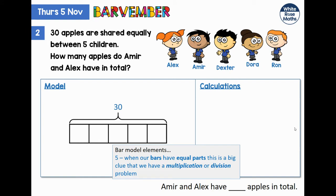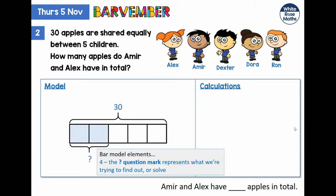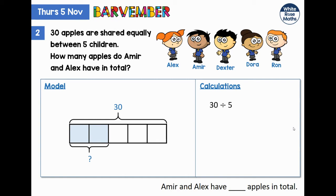The question says that these are shared equally, so my five parts of this bar are equal parts — and that's always a big clue that we're going to have a multiplication or a division. There's our question mark again, representing what we're trying to find out. We're being asked how much do Amir and Alex have in total, so we've got a curly bracket covering two of our parts. Our 30 represents five equal parts, so each of those is six. We need two of those, so two lots of six — a multiplication problem. In fact, it was a division and then a multiplication with our equal parts.